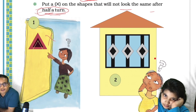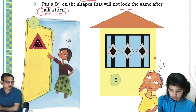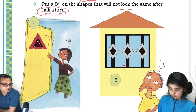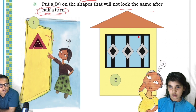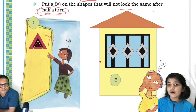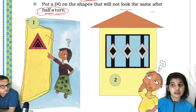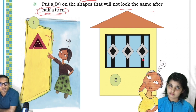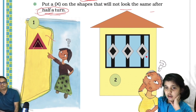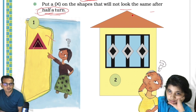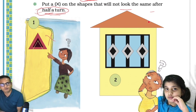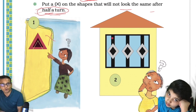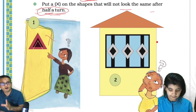About the house — I'm talking about the whole house. After half a turn the full house will not look the same, and even for a quarter turn the full house won't look the same. But what about the window? In the case of the window, it will not be the same after a quarter turn, but it will be the same after a half turn.